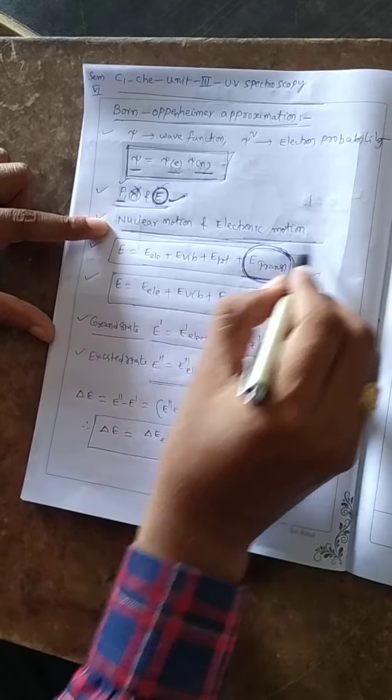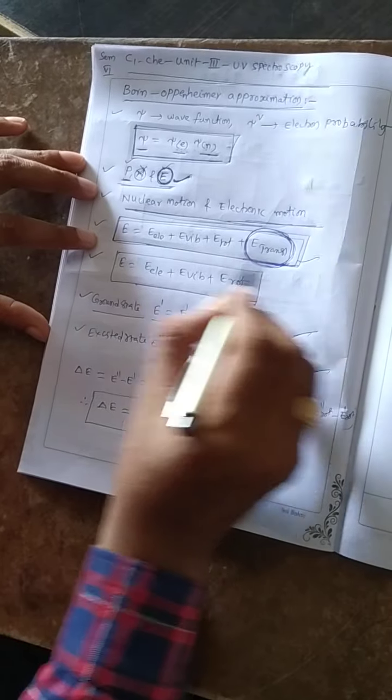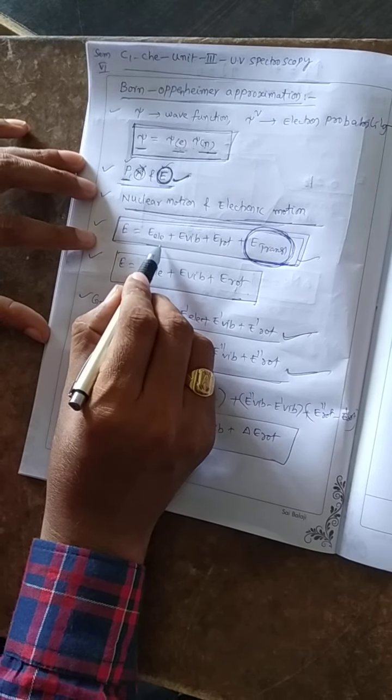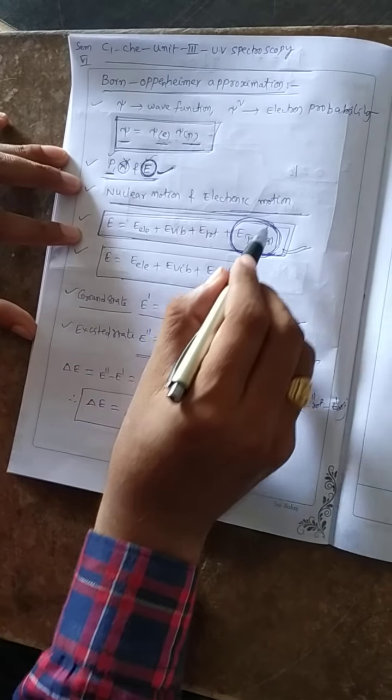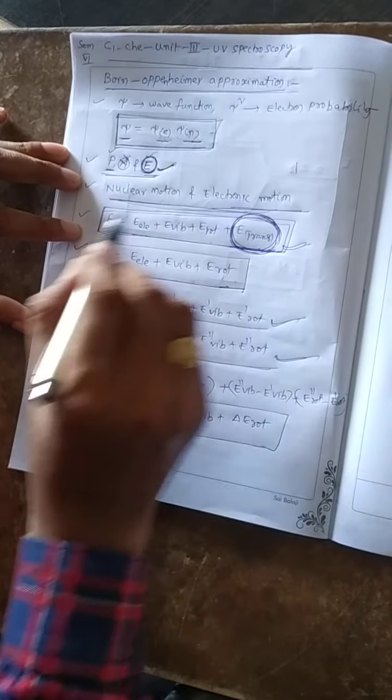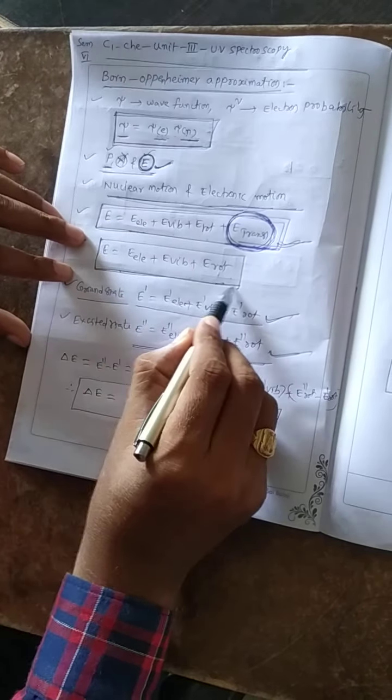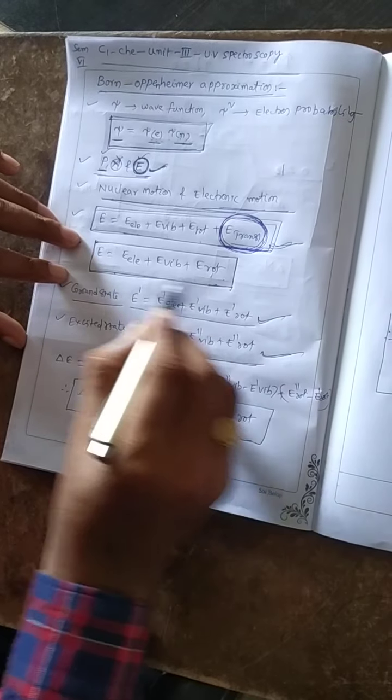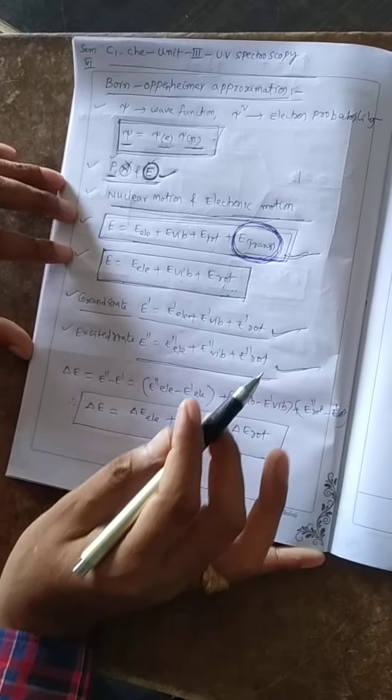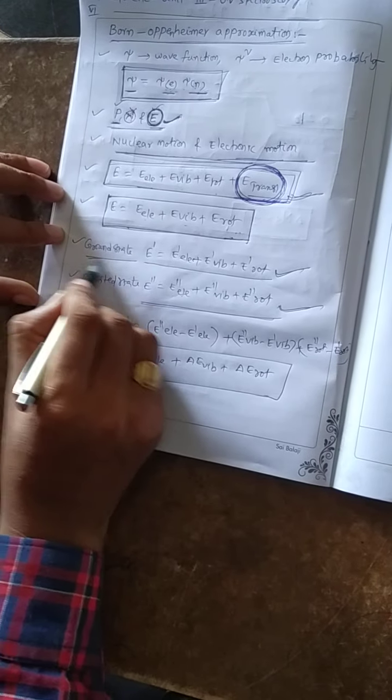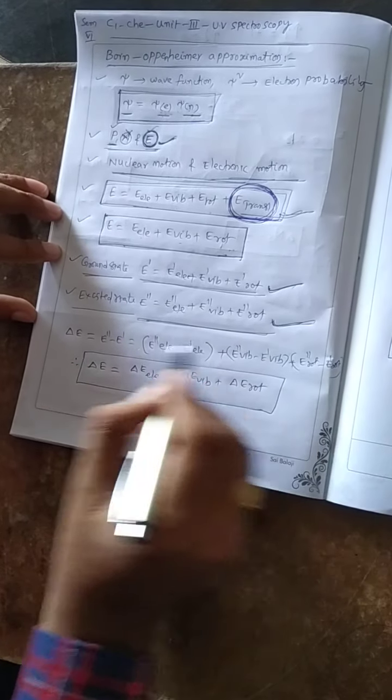From the Born-Oppenheimer approximation, two motions are considered: nuclear motion and electronic motion. The energy of a molecule in general equals sum of electronic energy, vibrational energy, rotational energy, and translational energy. But translational energy is not quantized so it is negligible. From Born-Oppenheimer approximation, the energy of a molecule equals sum of electron energy. Imagine an atom present in ground state versus excited state.